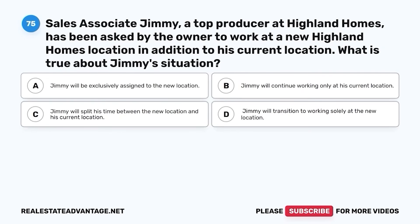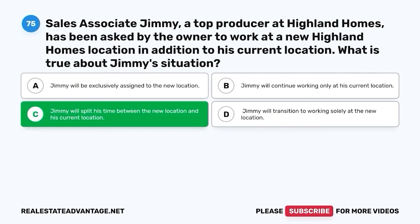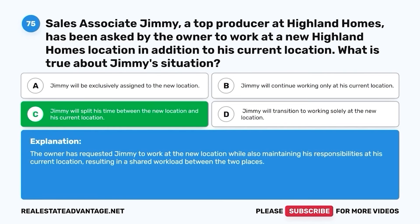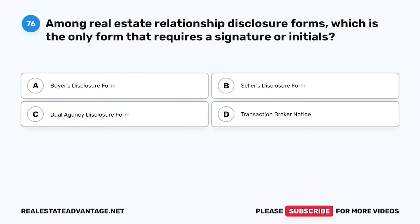Question 75. Sales associate Jimmy, a top producer at Highland Homes, has been asked by the owner to work at a new Highland Homes location in addition to his current location. What is true about Jimmy's situation? A. Jimmy will be exclusively assigned to the new location. B. Jimmy will continue working only at his current location. C. Jimmy will split his time between the new location and his current location. D. Jimmy will transition to working solely at the new location. The correct answer is C. Jimmy will split his time between the new location and his current location. The owner has requested Jimmy to work at the new location while also maintaining his responsibilities at his current location, resulting in a shared workload between the two places.